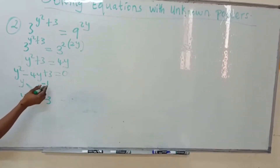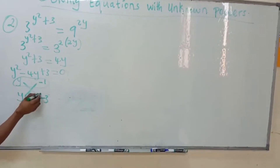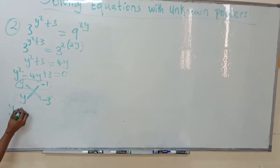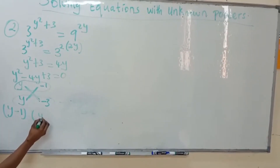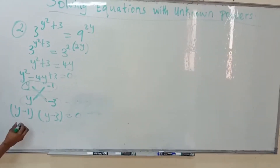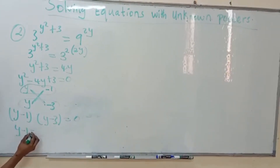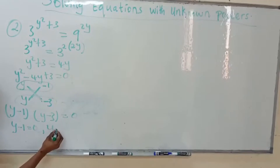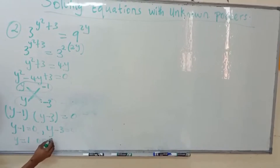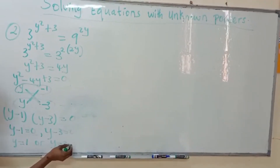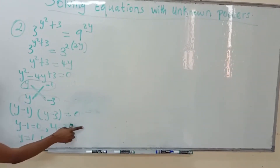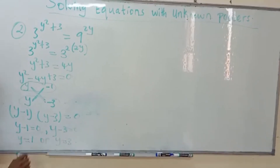Now we have the factors. So y minus 1 times y minus 3 equals 0. Therefore y minus 1 equals 0 or y minus 3 equals 0. The roots are y equals 1 or y equals 3. Minus 1 becomes plus 1, and minus 3 becomes plus 3 on the right hand side.